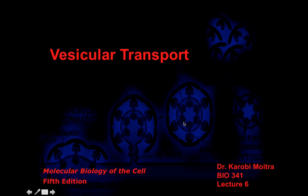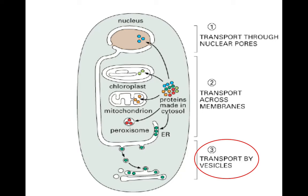Hello everybody. Today we are going to talk about vesicular transport. We talked about transport in class — basically the process of transport through nuclear pores, how proteins made in the cytosol can go into or out of the nucleus, and transport across membranes into the chloroplasts, mitochondria, peroxisome, and endoplasmic reticulum. But today we're going to talk about vesicular transport, or transport through vesicles.